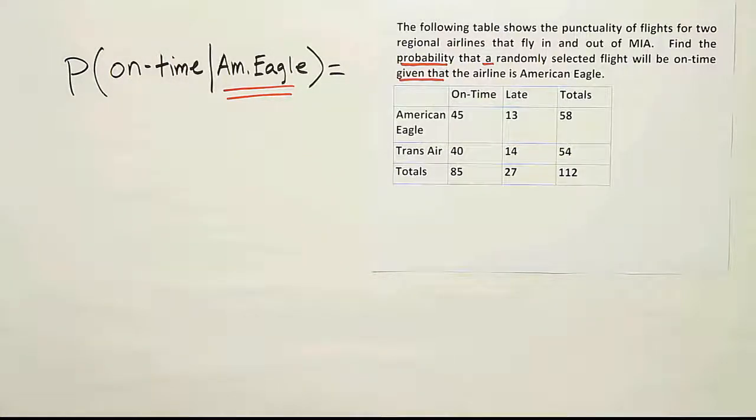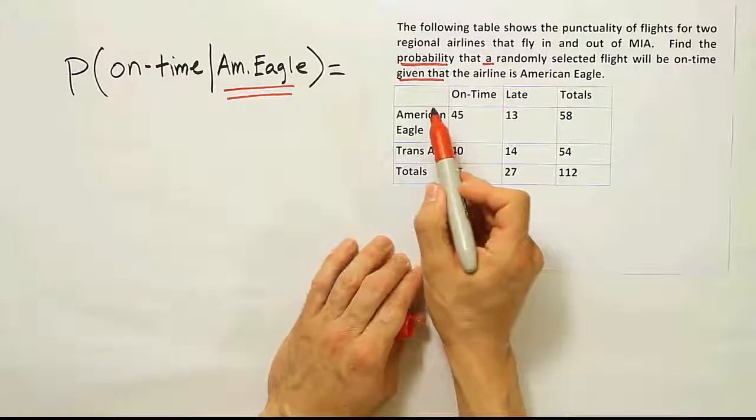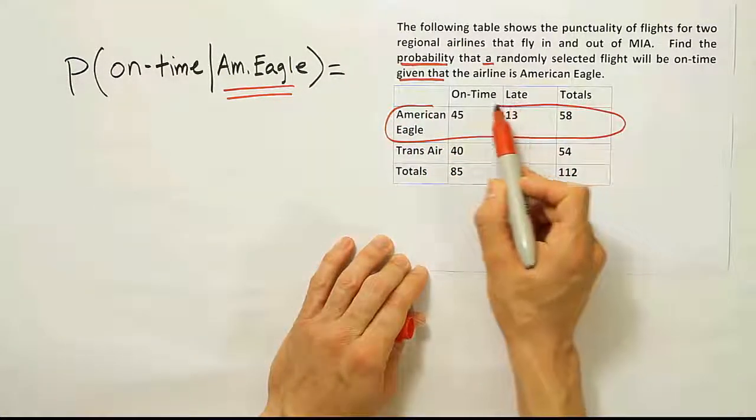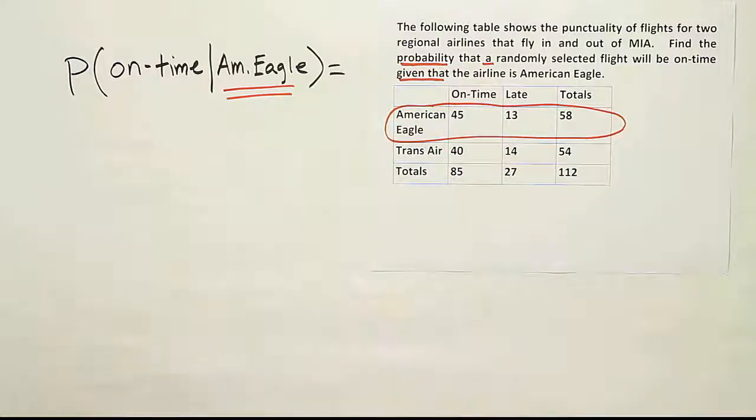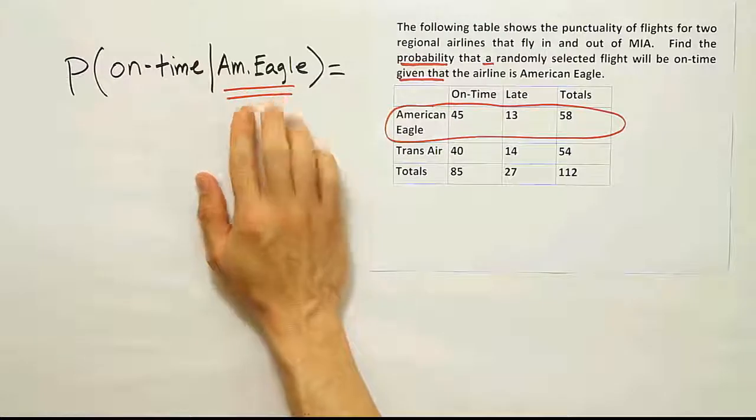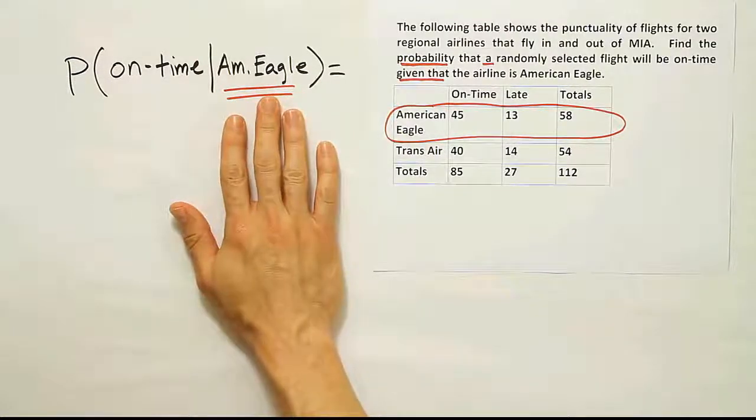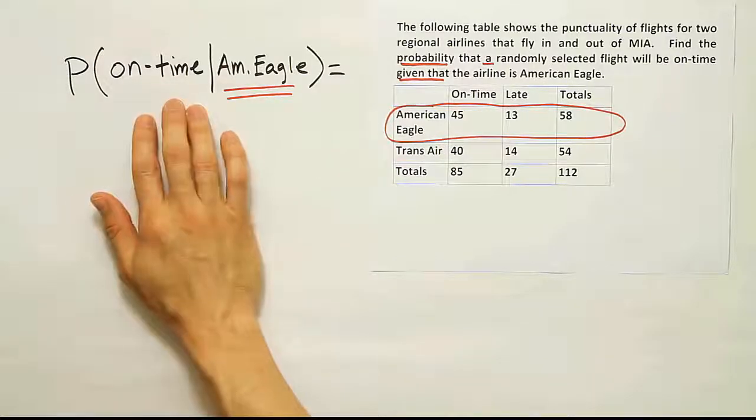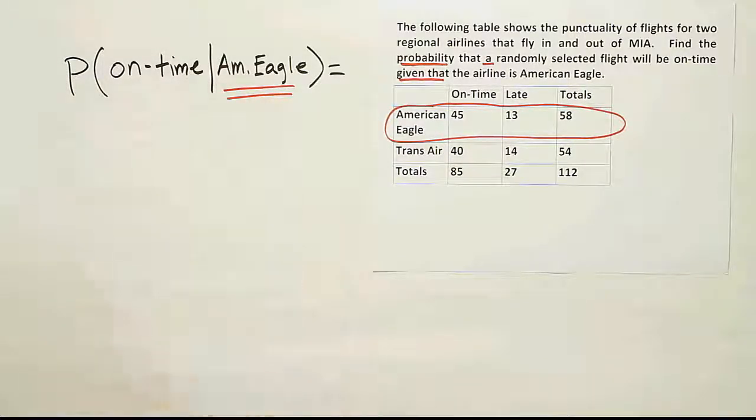We're only going to look at the row or column of data that corresponds to American Eagle. So when I look at the data laid out in the table, I see American Eagle here, and there's the row that corresponds to that category. So we're only focusing on this. Remember, this is the known condition, the thing that is true. So we know that we're dealing with American Eagle, and we're asking our question of what's the probability that the flight will be on time given that it's an American Eagle flight.